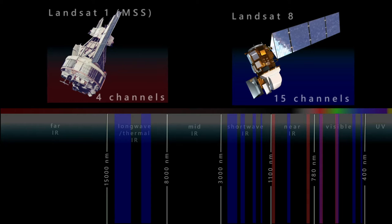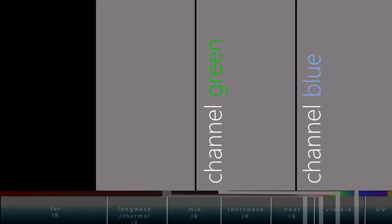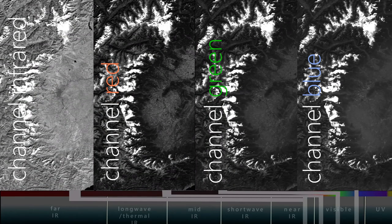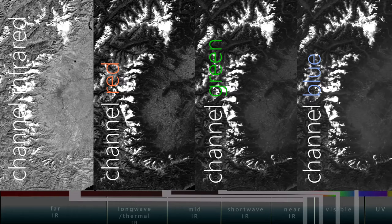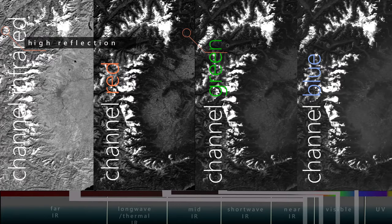The sensors used in remote sensing record wavelength ranges in specific spectral channels. The information captured by each channel is stored as a grayscale image. In each grayscale image, the intensity of the reflection in different areas of the Earth is recorded for the specific wavelength range of that channel.